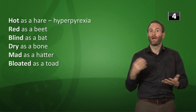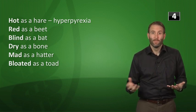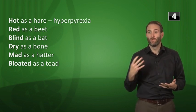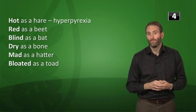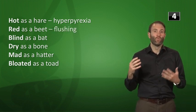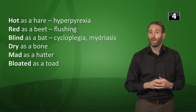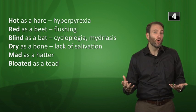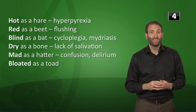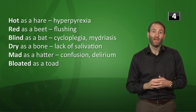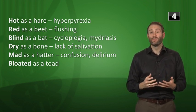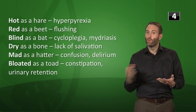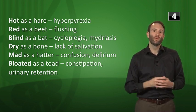Hot as a hare refers to hyperpyrexia because you're not sweating as much. Sweating is mostly controlled by the sympathetic nervous system, but sweat glands are innervated with muscarinic receptors, which is why this occurs with anticholinergic activity. People will also have flushing — red as a beet. Blind as a bat occurs because blocking parasympathetic activity causes cycloplegia and mydriasis, so patients lose the ability to accommodate. Patients will be dry as a bone because they won't be salivating as much.